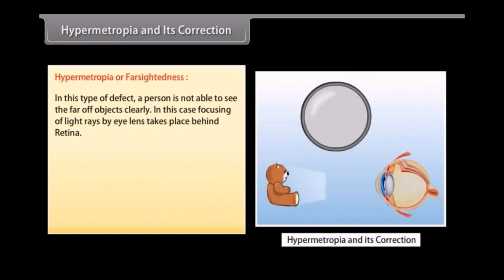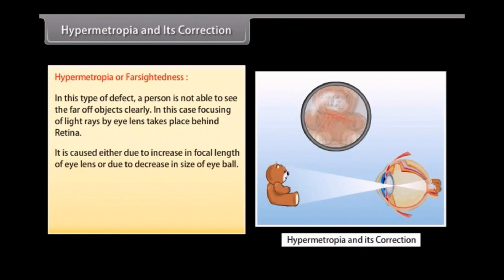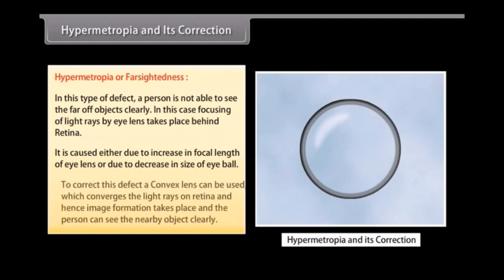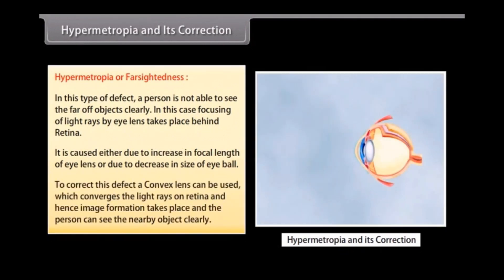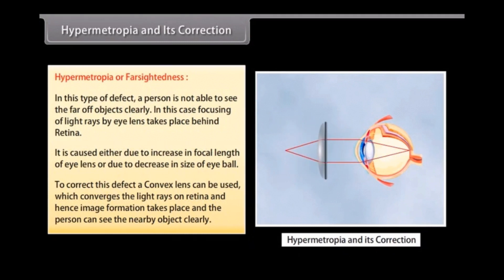In hypermetropia, a person is not able to see nearby objects clearly. Focusing of light rays by the eye lens takes place behind the retina. It is caused either due to an increase in focal length of the eye lens or a decrease in the size of the eyeball. To correct this defect, a convex lens is used, which converges the light rays onto the retina so the person can see nearby objects clearly.